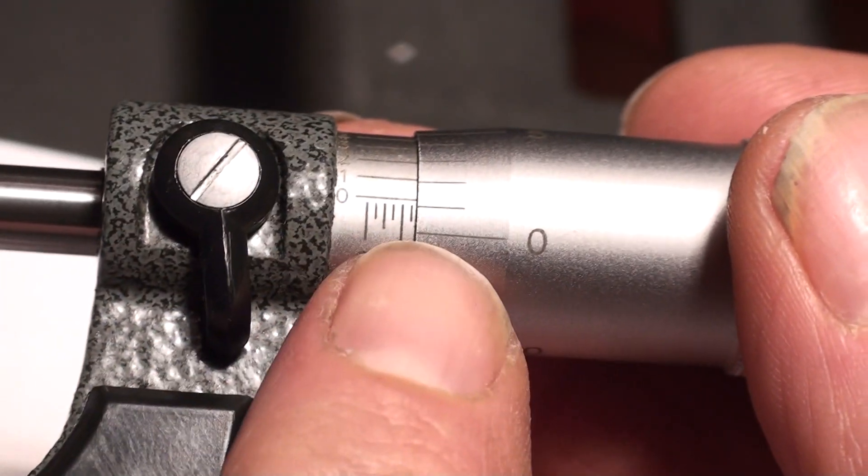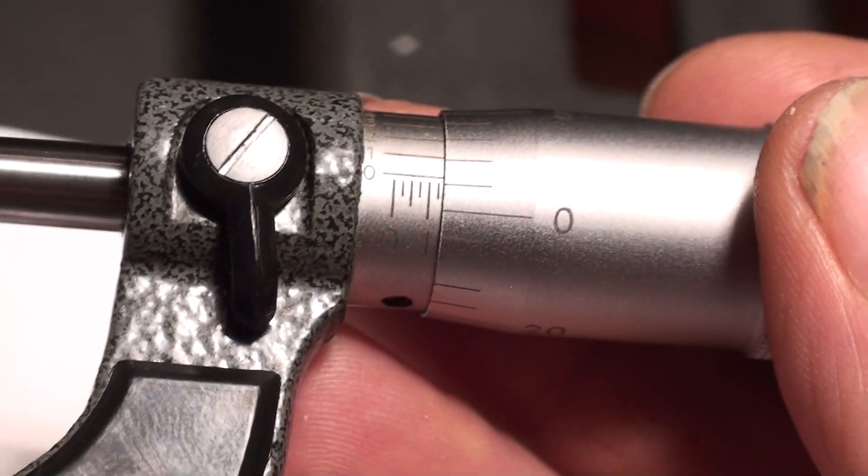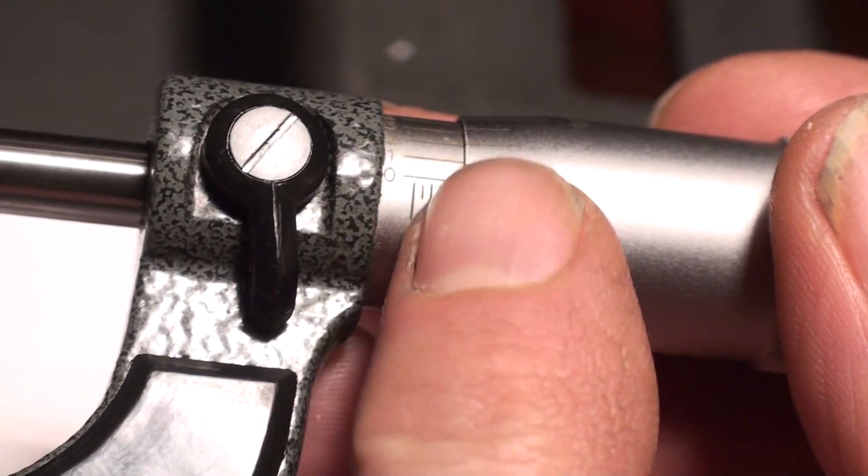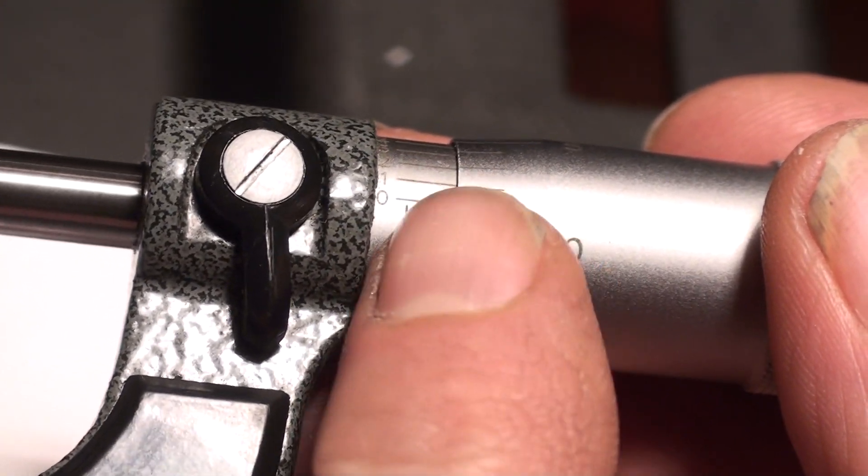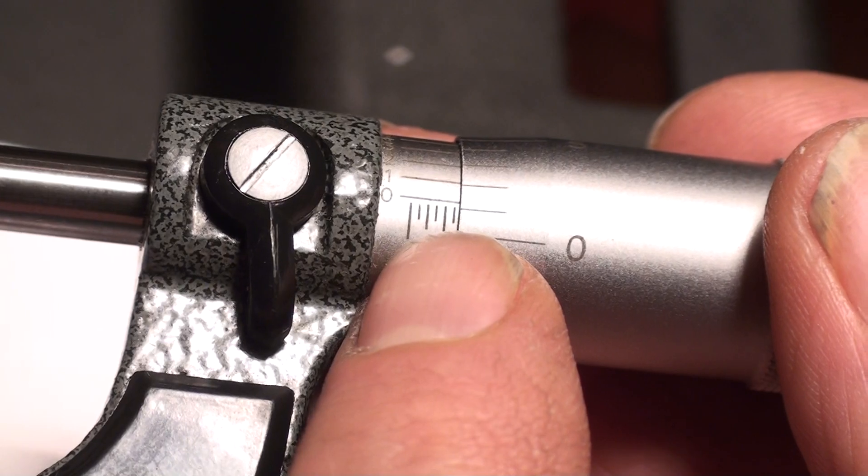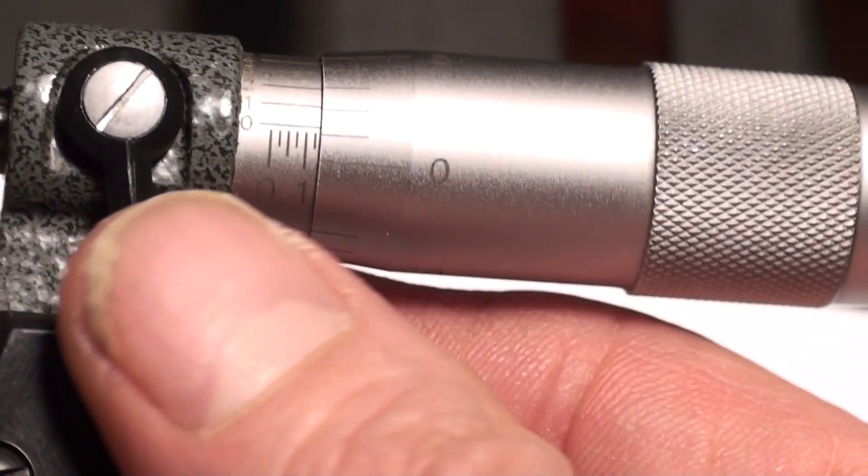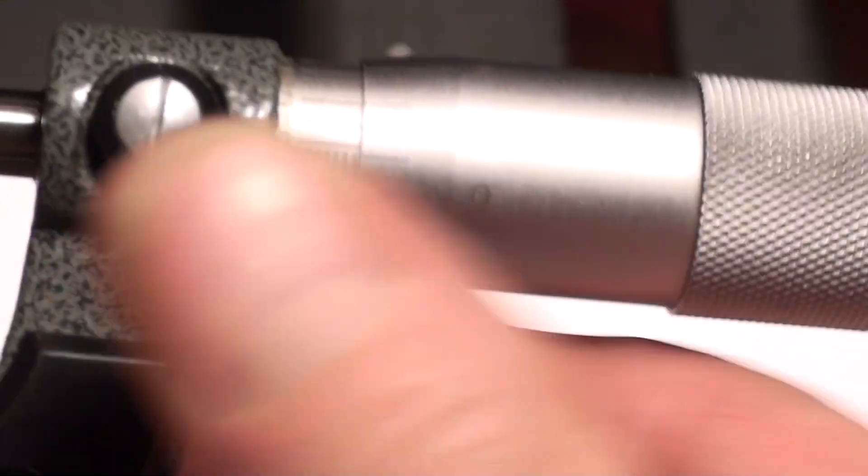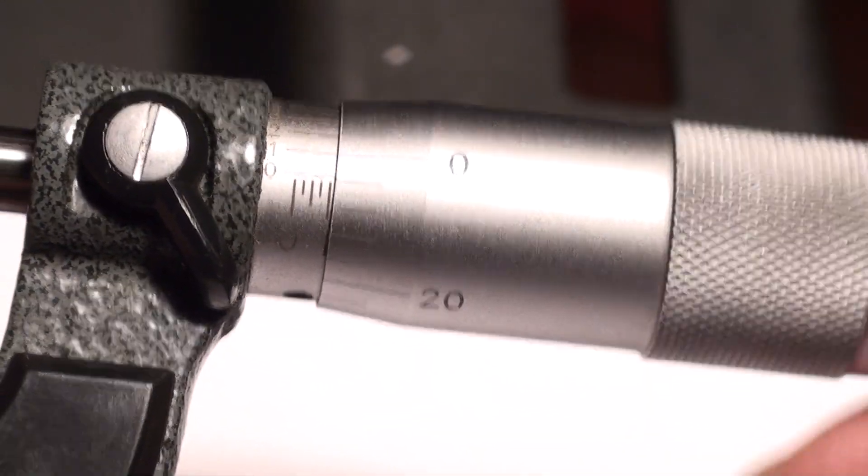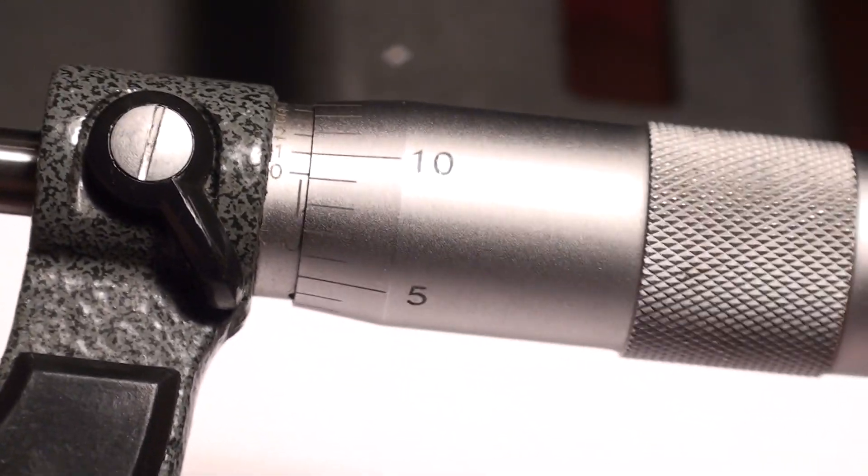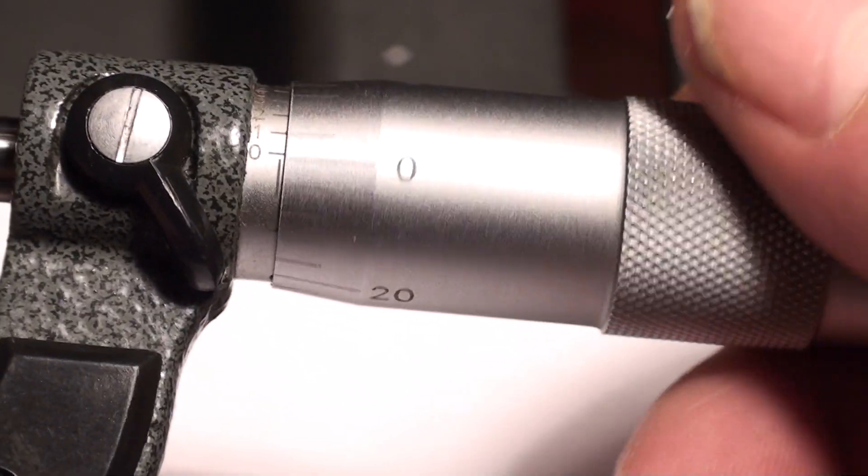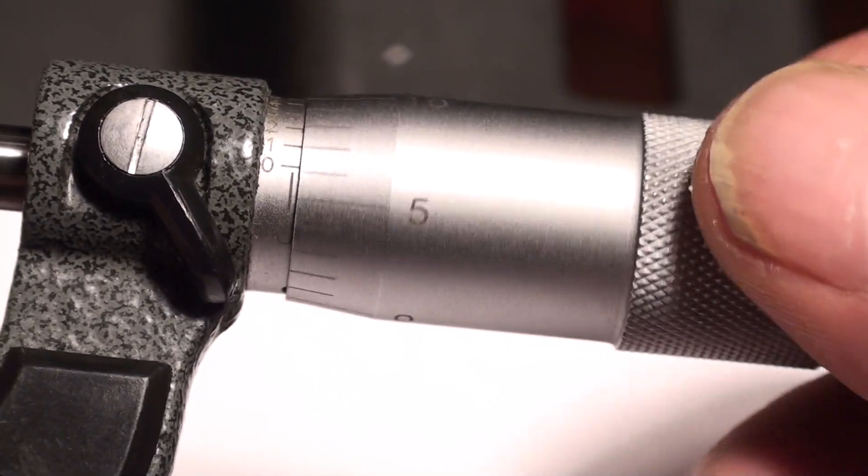Here are the graduations. It's the same as vernier calipers - each line on the inner sleeve is twenty-five thousandths of an inch. It's twenty-five thousandths because every full circle of the thimble